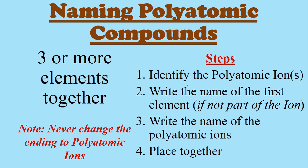Naming polyatomic compounds means there are three or more elements together. When you're looking at a compound and there are three or more different symbols, you have a polyatomic compound. The steps are: first, identify the polyatomic ion or ions — I usually box them. Then write the name of the first element, if there is one (basically name what you didn't box). Then write the name of the polyatomic ion, and combine everything. There is no end-changing when writing these — we do not change the ending of polyatomic ions; that's only for binary compounds.